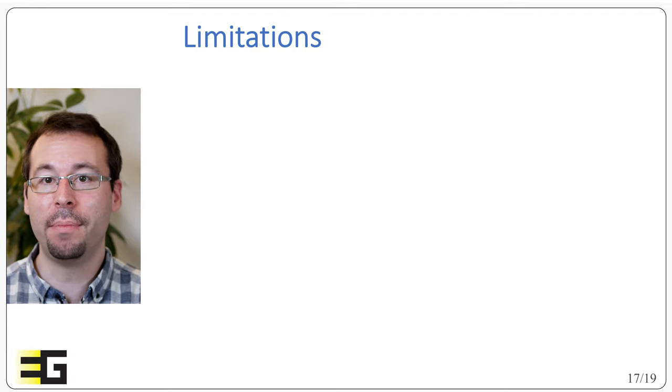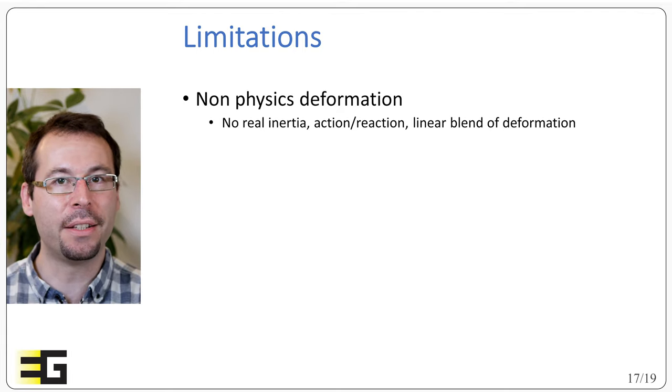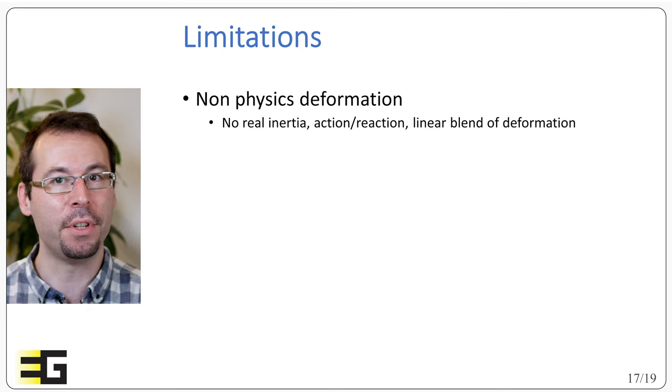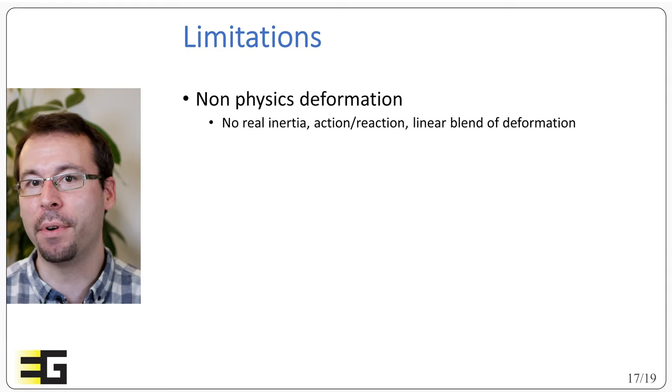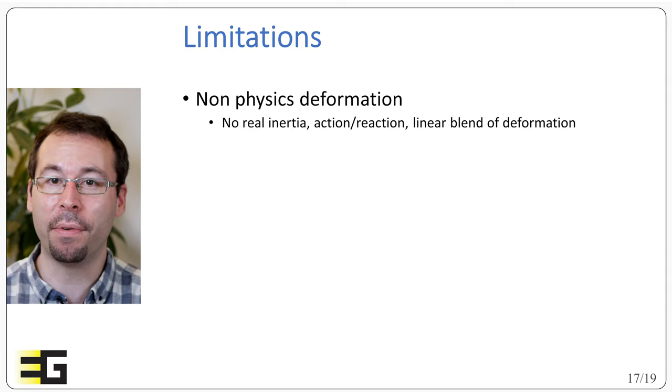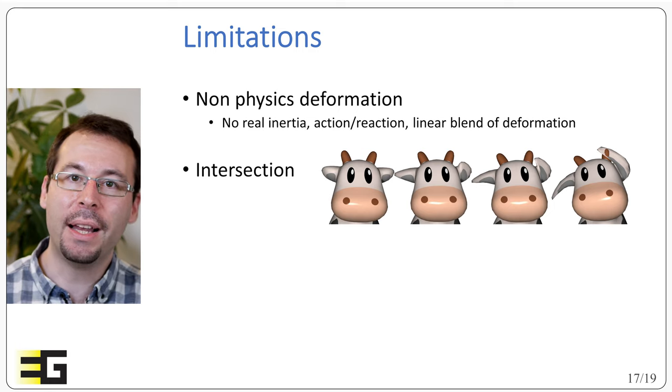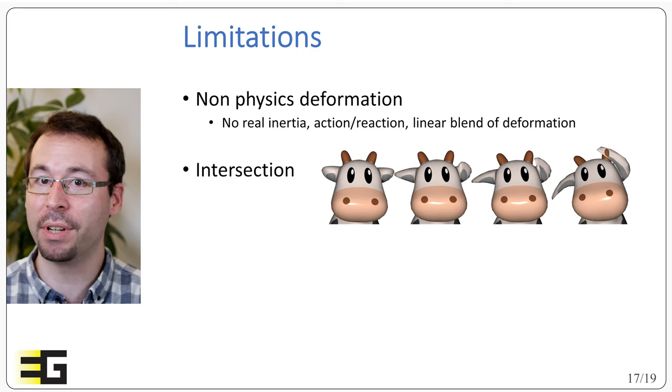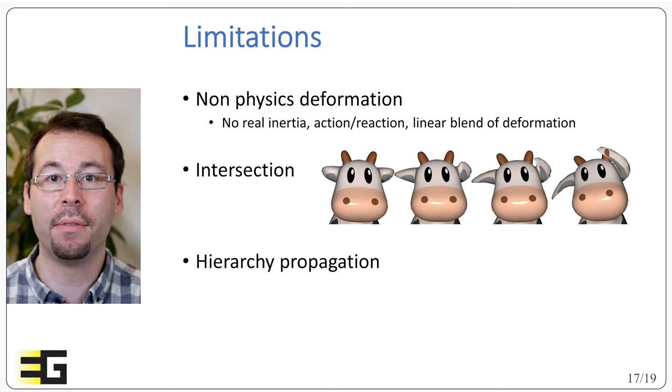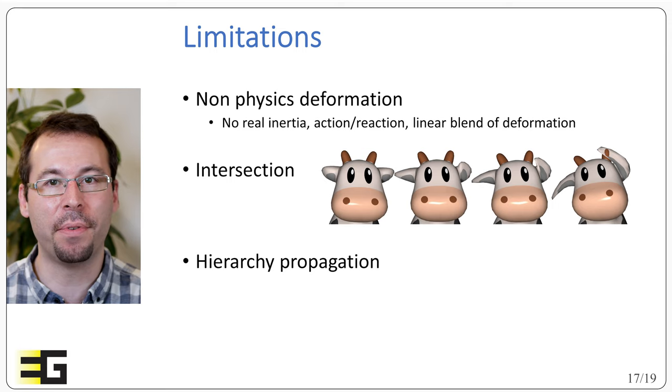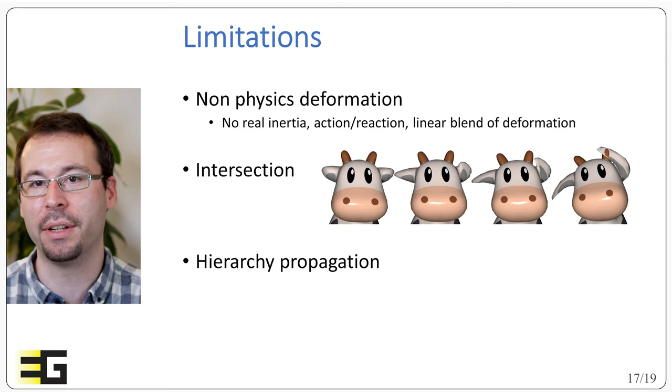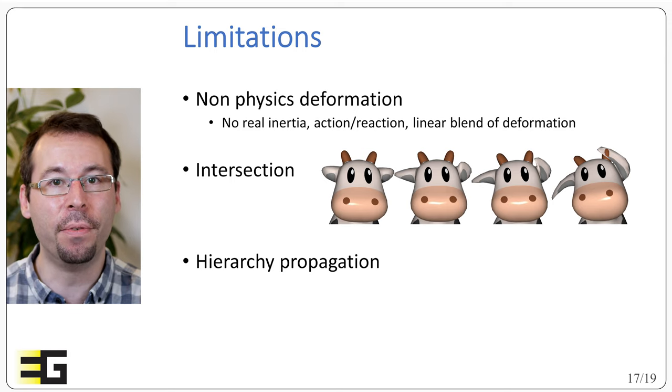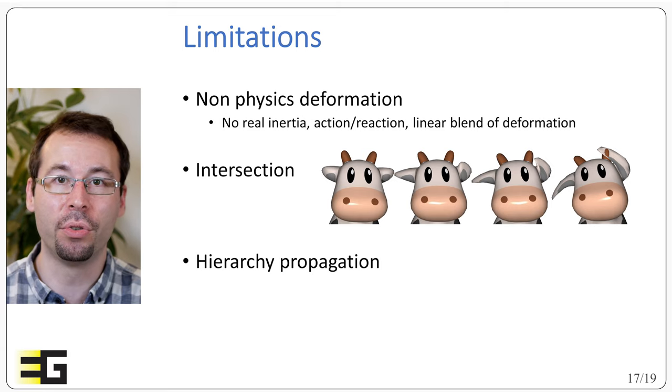Alright, so we can note some limitations to this method. First, we have to be clear that it's not a physics-based deformation. We don't take into account a real notion of inertia, there is no notion of action and reaction, and the global deformation is limited to linear blending of affine transform. Also, if we apply large deformation, we may have self-intersection. This can happen when we have very soft and elongated details on the character. Also, a principle of velocity skinning is to assume that the deformation propagates along the hierarchy of the skeleton. So the method is well suited to handle forward kinematics, but not directly inverse kinematics, or to handle deformation due to contact.